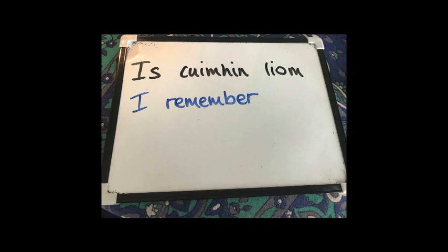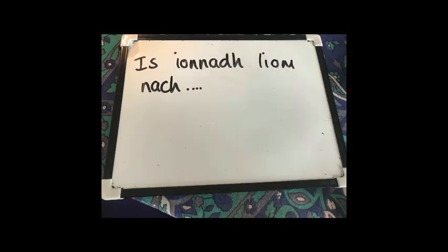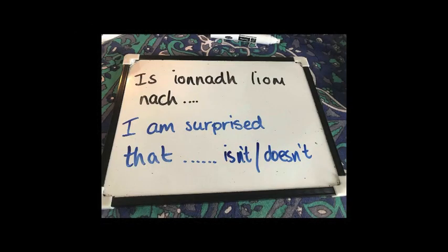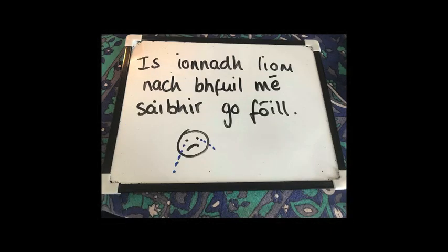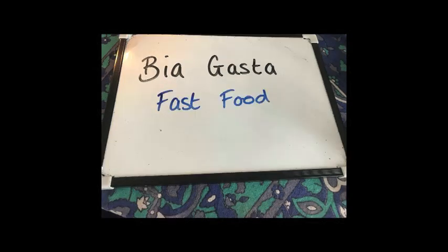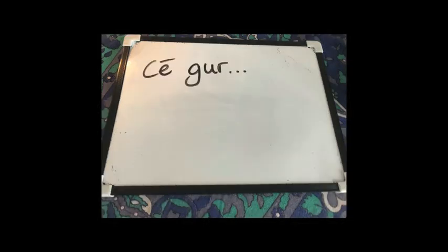'Is cuimhin liom' means 'I remember'. Is cuimhin liom do mhamó — I remember your mummy. Is cuimhin liom nach — and the nach makes it negative, that something isn't or doesn't. Is cuimhin liom nach. 'Bia gasta' is our fast food — bia gasta, bia gasta. Is cuimhin liom bia gasta. 'Cé go' means 'even though'. Is fuath liom bia gasta cé go — even though. Cé go raibh ár líne a bhíon — what does that mean?